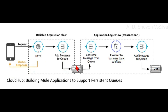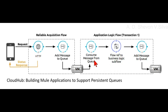The VM queue interacts with both the reliable acquisition flow and the application logic flow. In the application logic flow, consume-message-from-queue is connected to a flow reference to the business logic sub-flow, and then to add-message-to-queue. Transaction one is represented here.